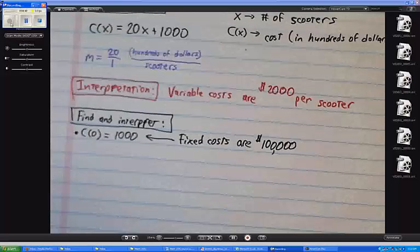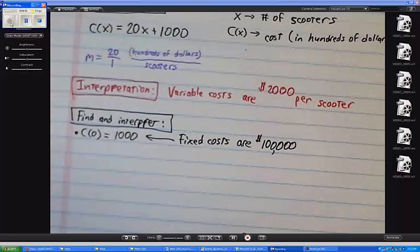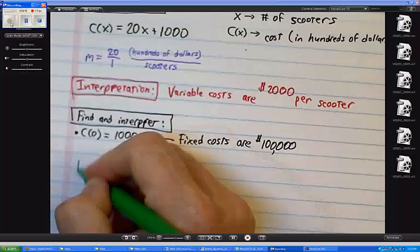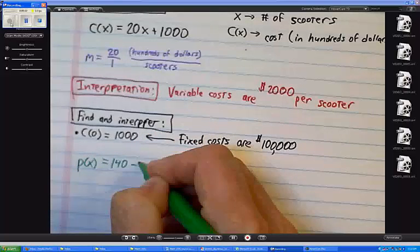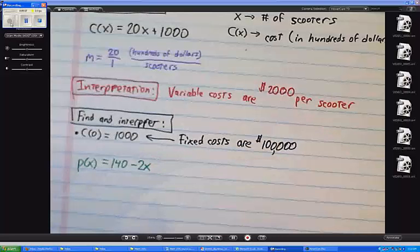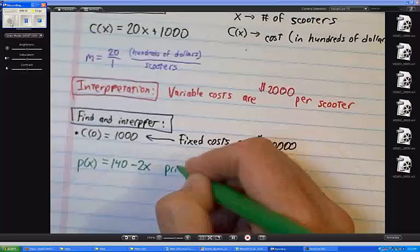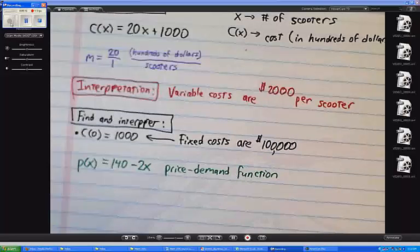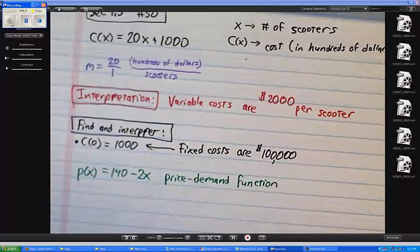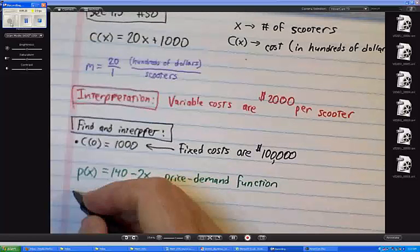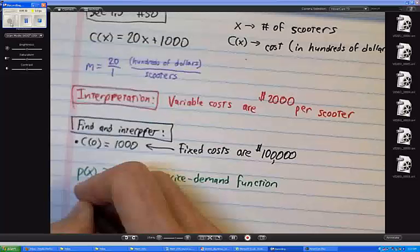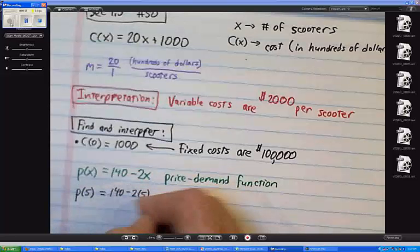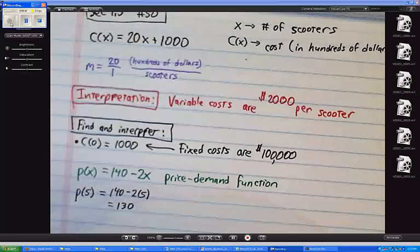Find and interpret little p of 5. Well, they have to tell you what little p is, all right? So let me show you that. It says little p of x is 140 minus 2x, and that's called the price demand function. Okay, so what would that mean? Well, it means that when we say p of 5, of course I can write that down, and it's not hard to compute. But that's $130, but what does it mean?